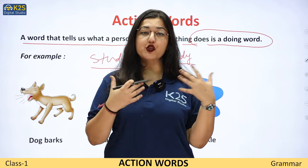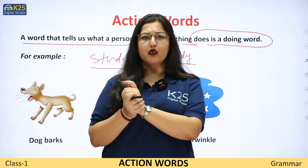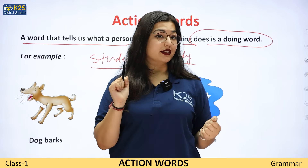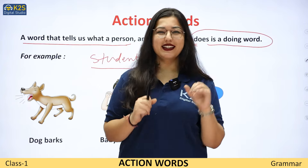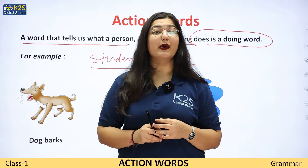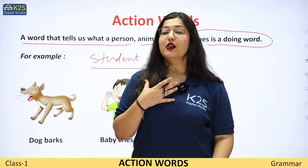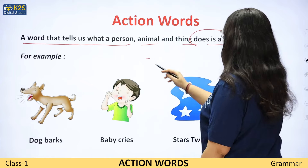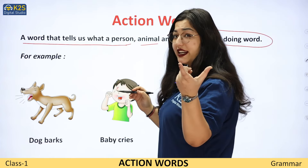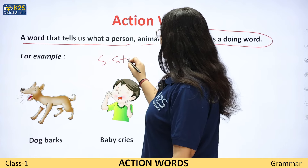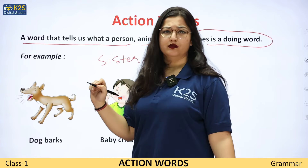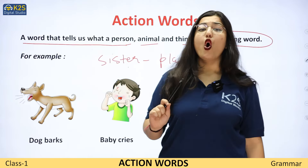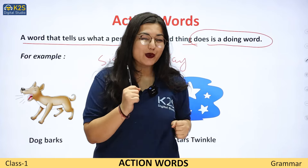Suppose mama — mother — aap ki jo mother hai, woh cook kar rahi hai. Toh mother ek noun ho gya, aur jo noun kaunsa action kar raha hai? Cooking karne ka. Toh cooking ek action word ho gya. Aap ki sister khel rahi hai. She is playing. My sister — jo ki ek noun hai — sister bhi kya hai? Ek noun hai, kyunki ek person ka naam hai. Sister kya kar rahi hai? Play. Sister is playing. Toh sister kya ho gya? Mera noun. Aur play kya ho gya? Mera action word.